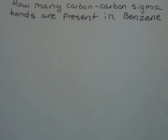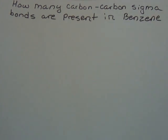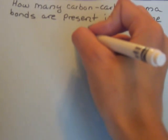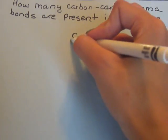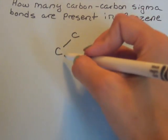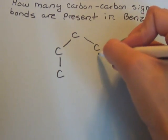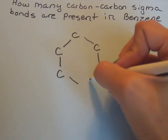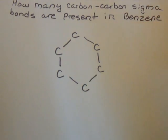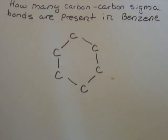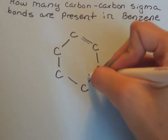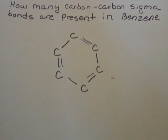For this question, they're asking us to find how many carbon-carbon sigma bonds are present in benzene. So first I'm going to start off by drawing benzene. Benzene has six carbons and it also has three double bonds. So that's benzene.